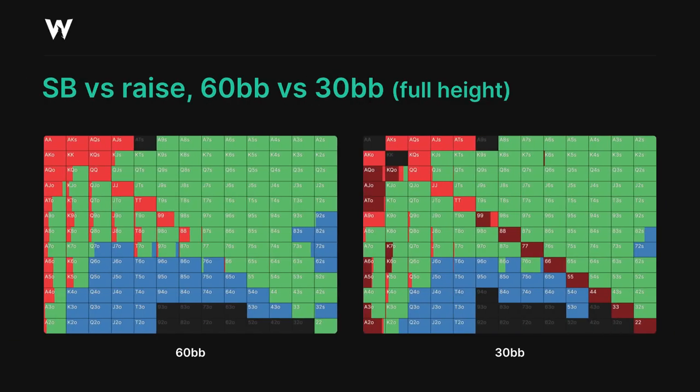If we drop the stacks to 30 big blinds, crossing over that second 40 big blind pivot point, we can now see that a limp jamming range becomes a big part of our strategy. Pocket pairs up to 9s, and a lot of the strongest and weakest offsuit aces are forming the foundation of our range. Once again, our jamming range is composed of those two hand categories.